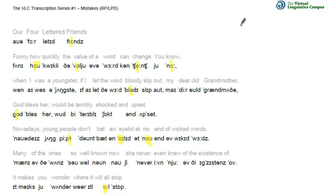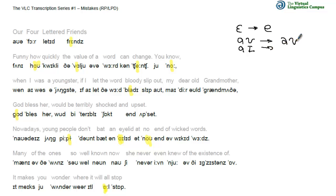For example, the epsilon doesn't exist — it should be replaced by a standard A or E symbol. Diphthongs always start with the typewritten A, so these should be replaced accordingly. There is no long A and no long O; both are diphthongs in RP: A, an up-gliding diphthong, and O, another up-gliding diphthong.